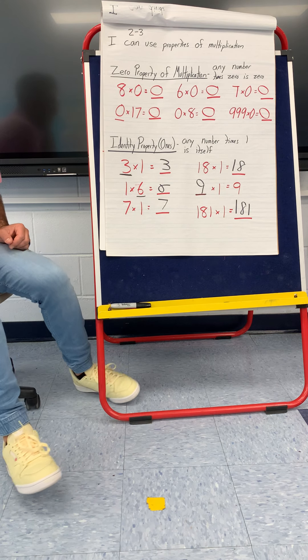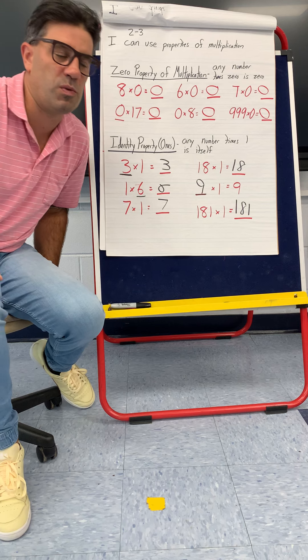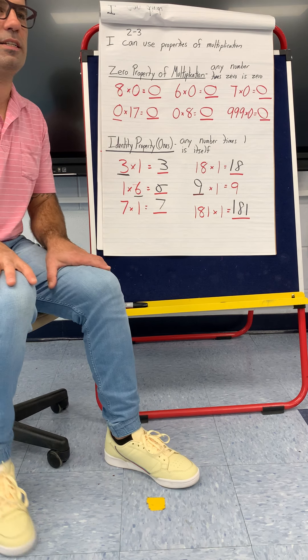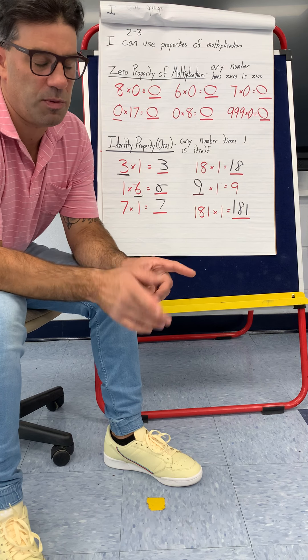181 times one. What's 181 one time? So it's just 181. Pretty simple.